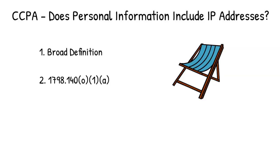When most people think of personal information — if I said to you, look at that person over there, what would their personal information be? — you might say things like their name, their street address, their email address, their phone number, social security number, their driver's license number. And the new privacy laws include all of that.